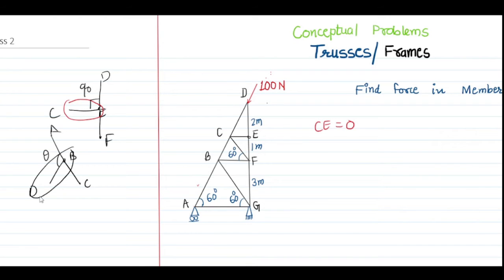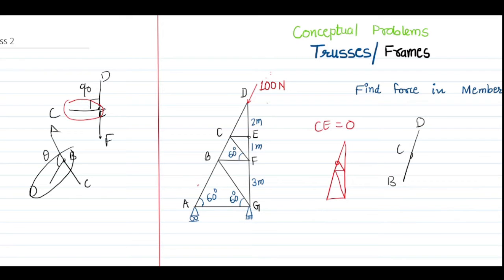Once CE is identified as a zero force member, I remove CE and redraw the truss. Now the simplified truss has CF and FB as the remaining members at that region. Looking at joint C again, there are three members: DC, DCB as a collinear pair, and CF as the side branch. So CF is also a zero force member and is removed. After removing CF, at joint F the member BF becomes the side branch and will also experience zero force.